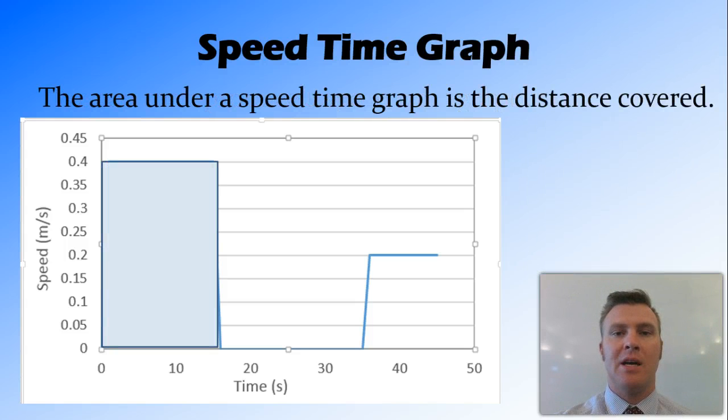Now, with the speed time graph, the area under the speed time graph is the distance that we've travelled. So, if we look at this initial distance here, from 0 to 15 seconds, and in this case it's distance equals speed times time, but the area of a square is base times height.